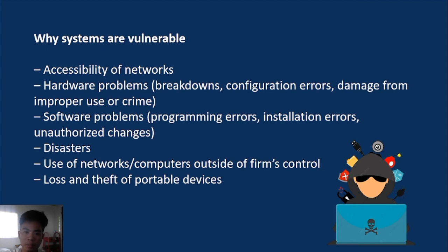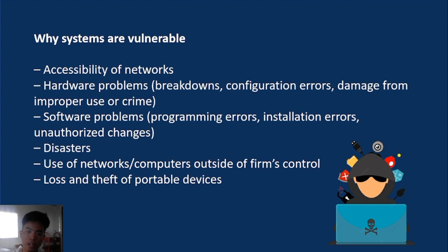Next are hardware problems: breakdown, configuration errors, and damage from improper use or crime. When the main units holding the system are damaged, all other system functions are affected — for example, data loss when servers fail. Similarly, disasters are unexpected events happening on the network; the system is vulnerable to these unexpected occurrences, so maintenance is needed immediately to prevent problems from growing.